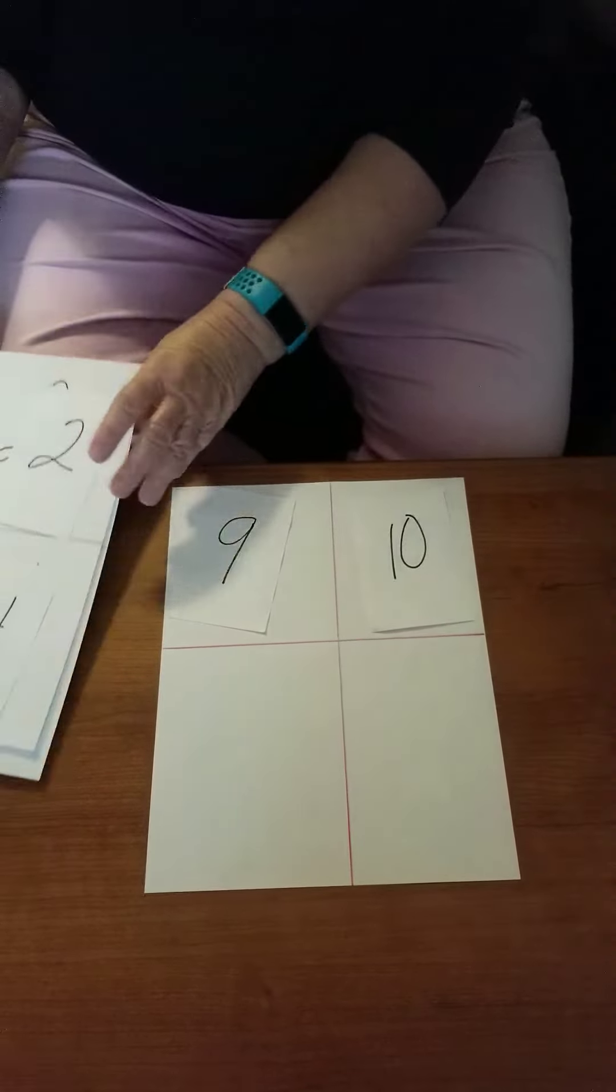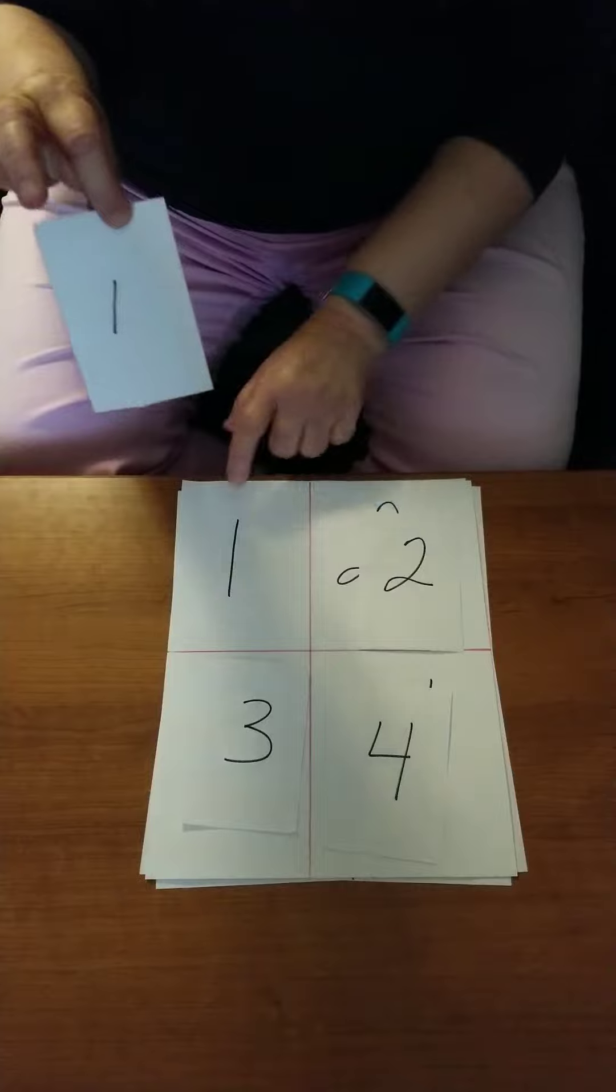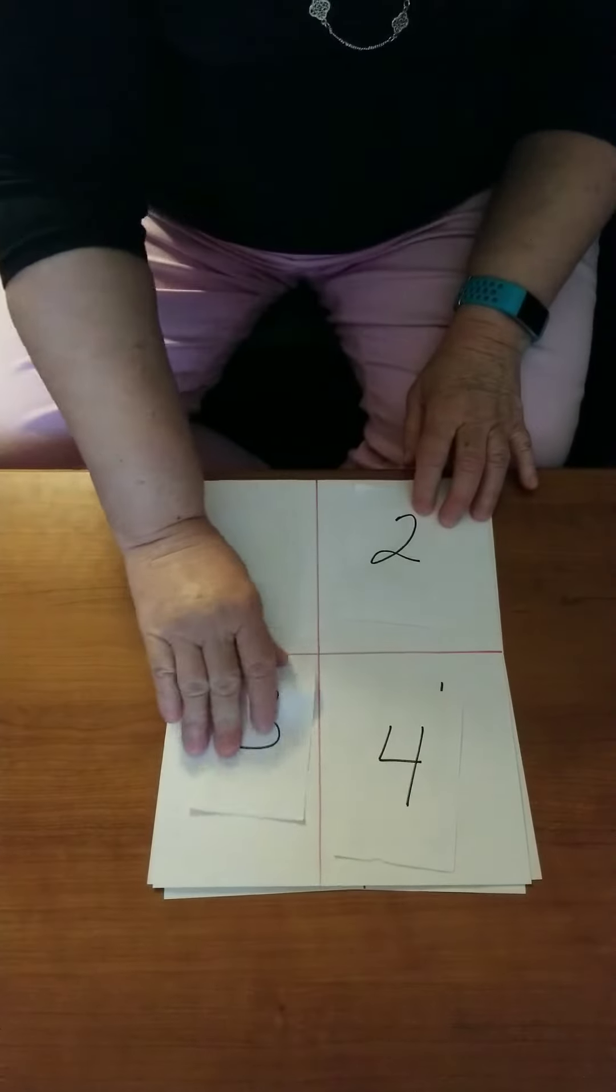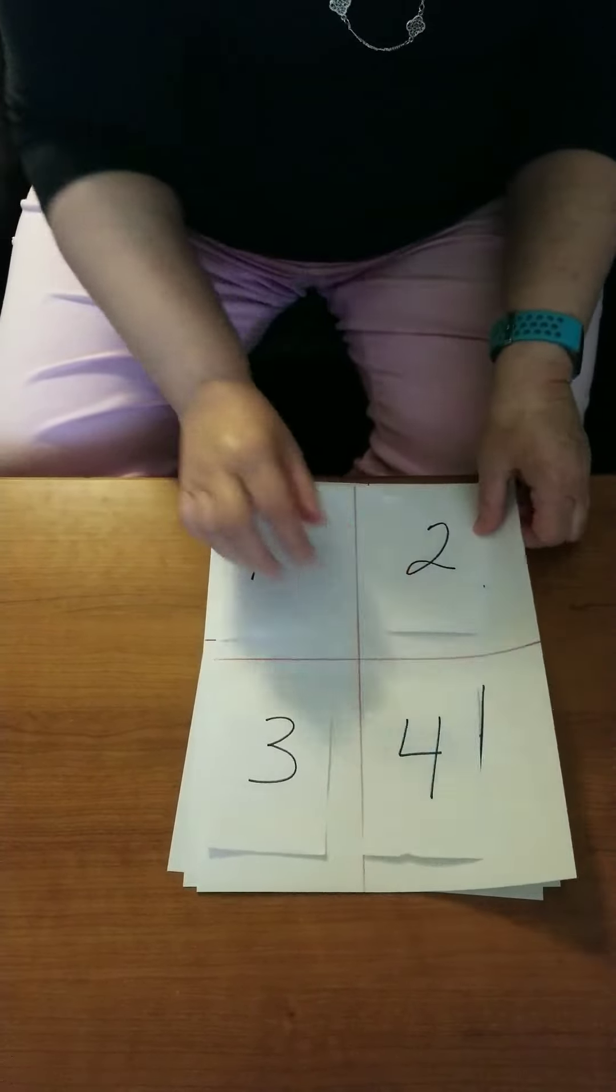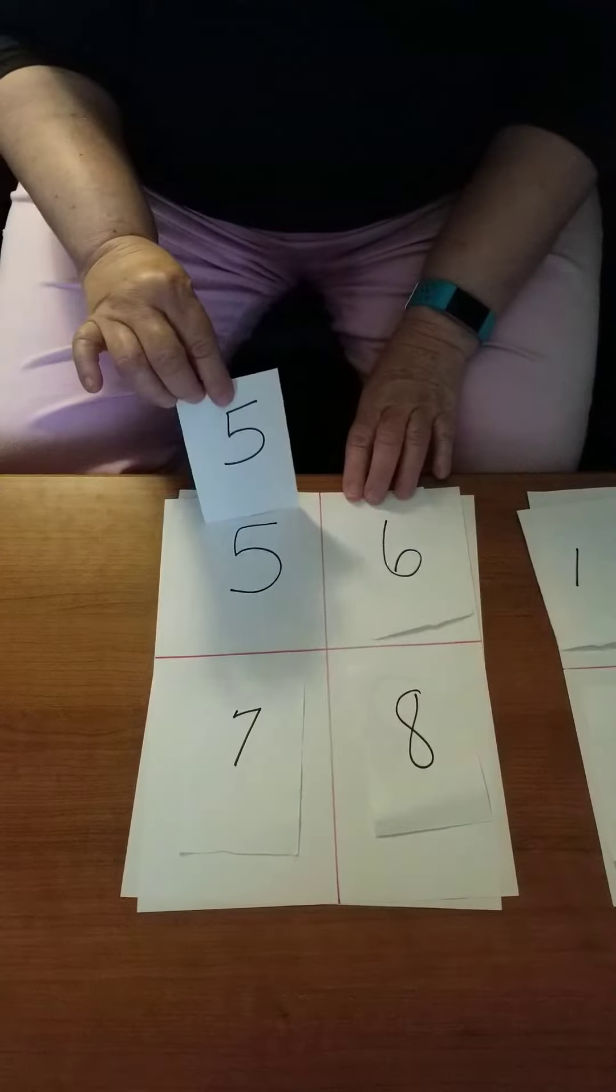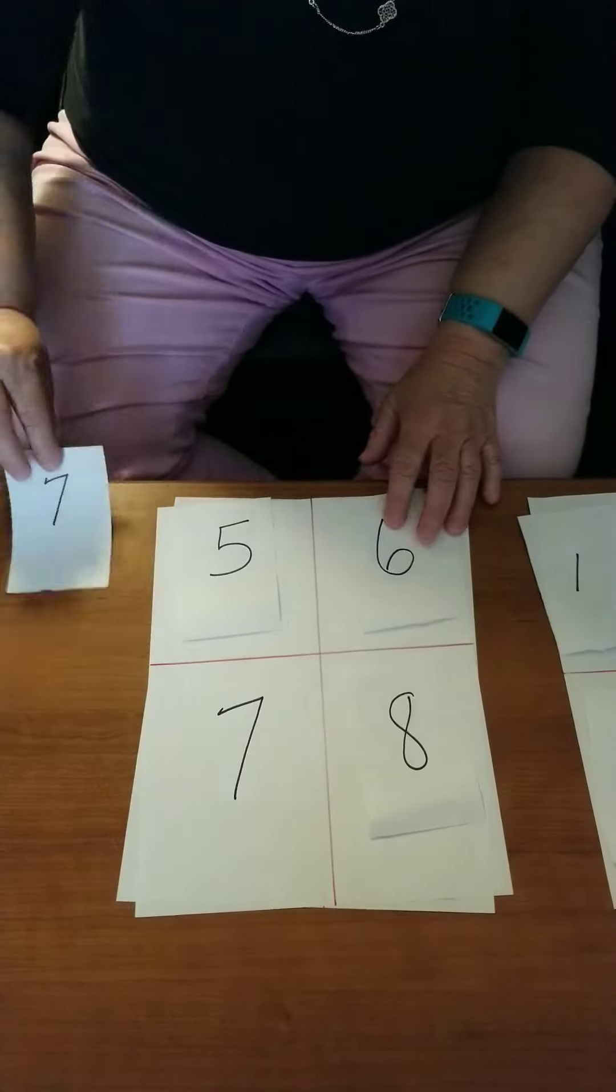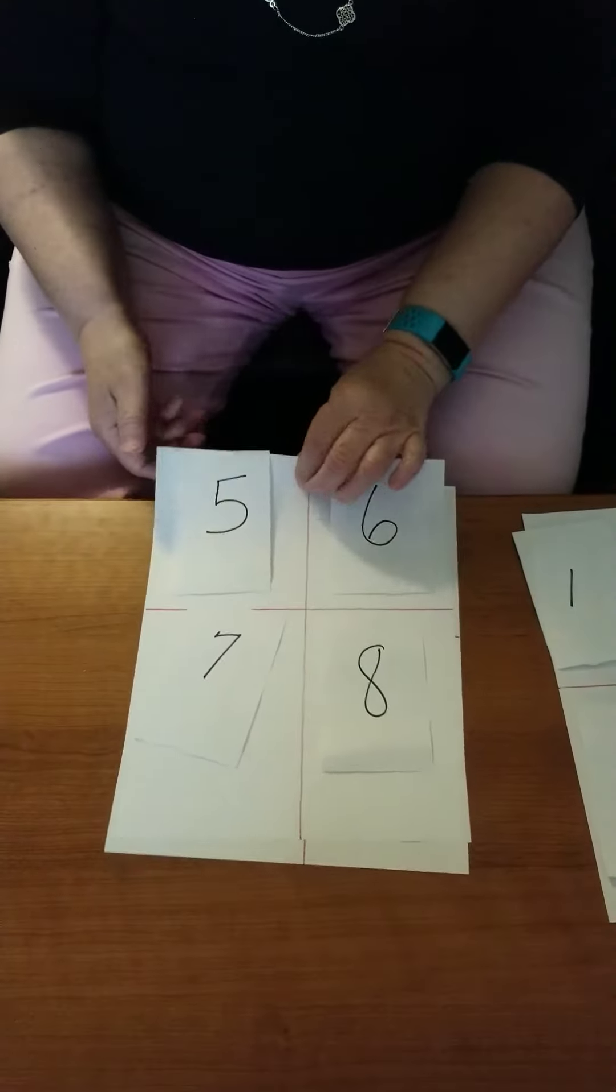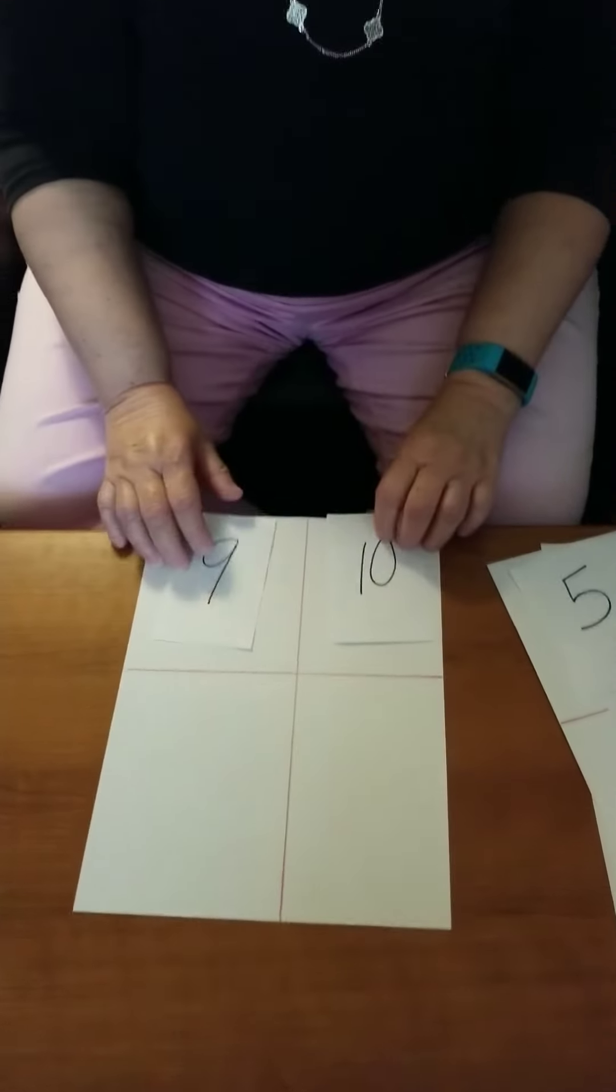So we have matched all our numbers and identified and recognized them one through ten. Here we go. Number one with one, number two with two, number three with three, number four with four, number five with five, number six with six, number seven with seven, number eight with eight, number nine with nine, and number ten with ten.